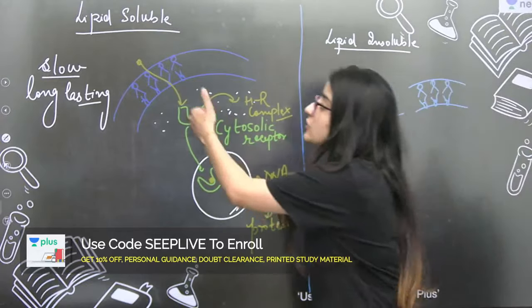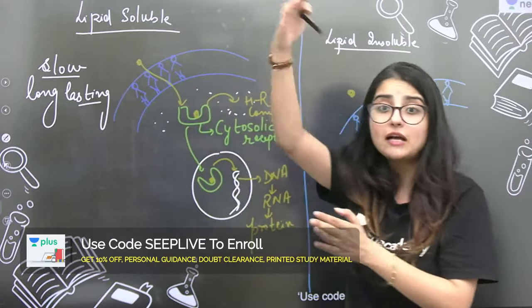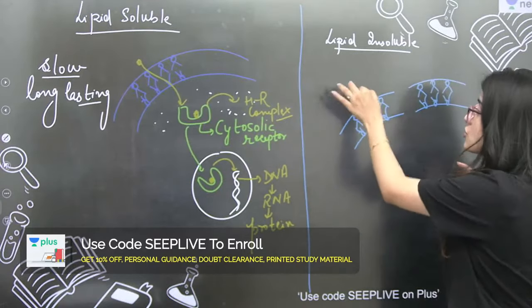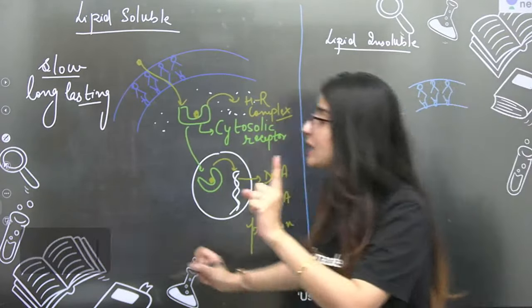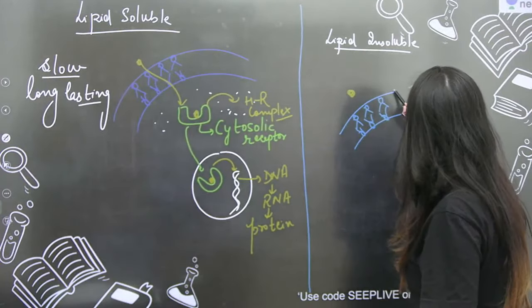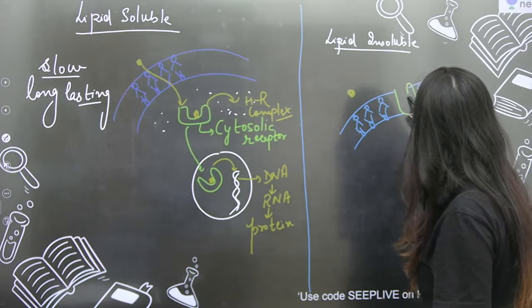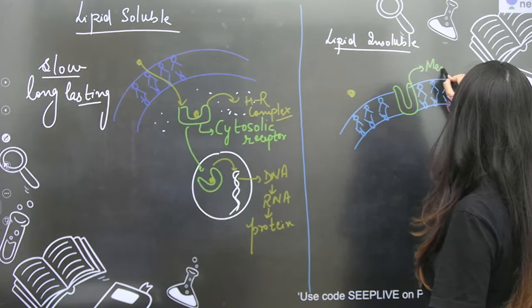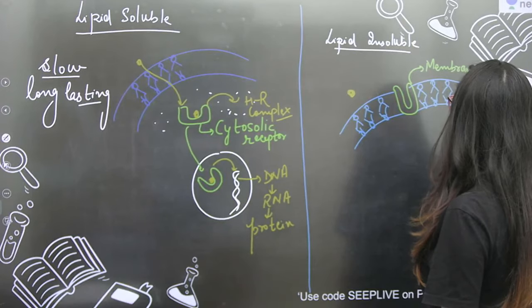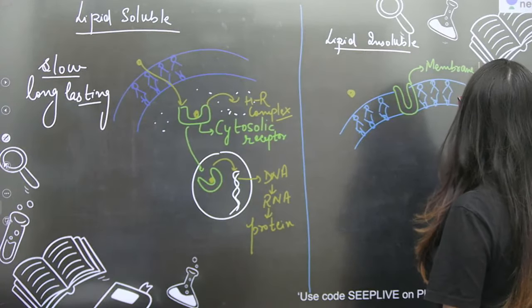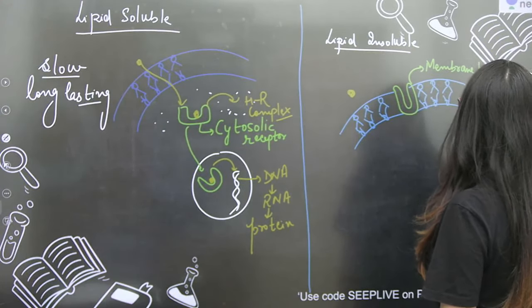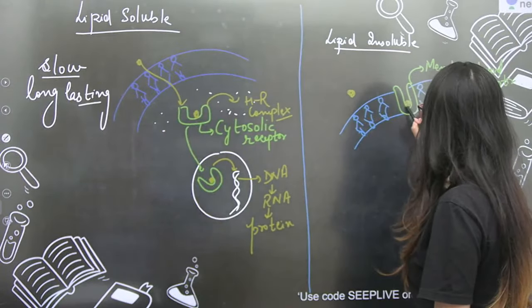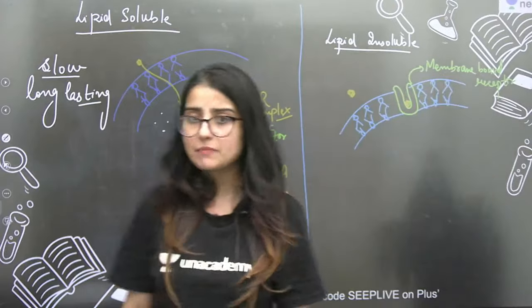That means this receptor is present in the membrane. So here the receptor is actually a membrane-bound receptor. The hormone has not been able to go inside. Where did it become a complex? It has become a complex with the membrane-bound receptor.